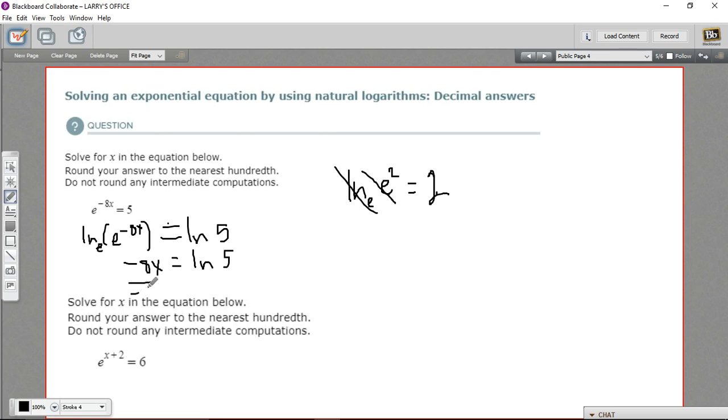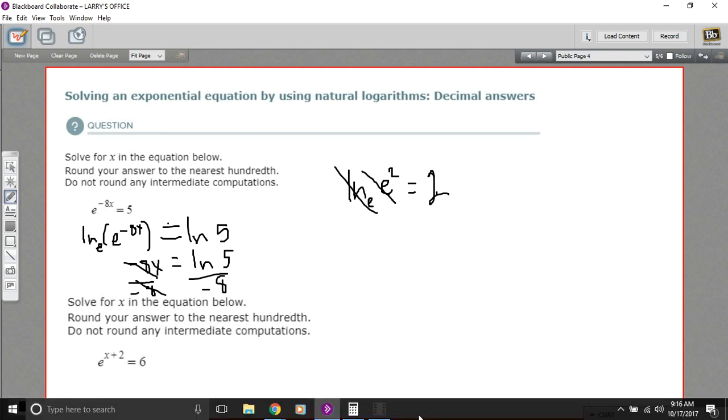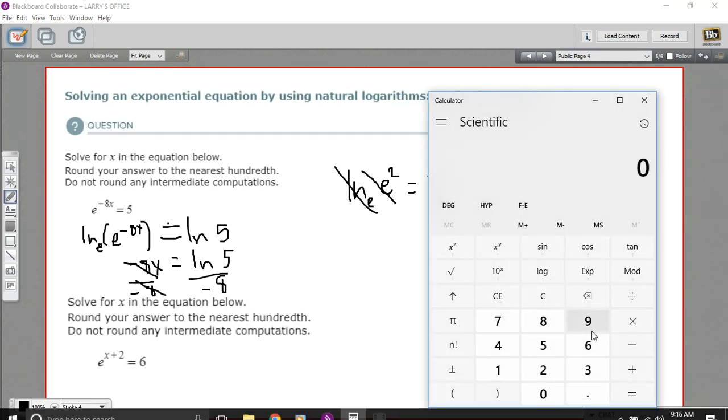Now to solve for x, I simply need to divide by negative 8. And we get this expression here, the natural log of 5 divided by negative 8. That's something I can find on the calculator. So let's go ahead and do that.